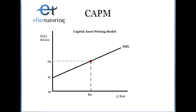The model takes three variables into account. The risk-free rate, RF, which is the return you would get on holding, say, a three-month T-bill. We also have RM, the return on the market, which would be holding an index fund for one of the major stock exchanges. We also have the level of systematic risk, beta, and I'll explain more about beta after.